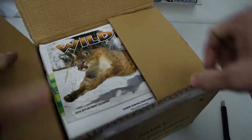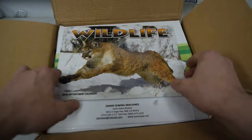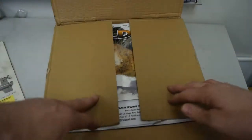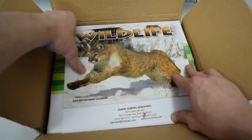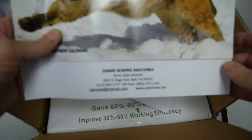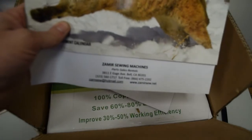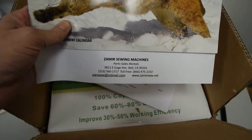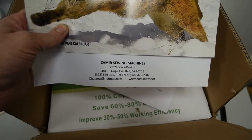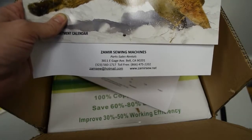Oh nice. A wildlife appointment calendar. I should say that first - I bought this from, I don't know if you can read that there, but that's in focus. I bought this from Zemir Sewing Machines through eBay. You can see their address there. They sell on eBay.